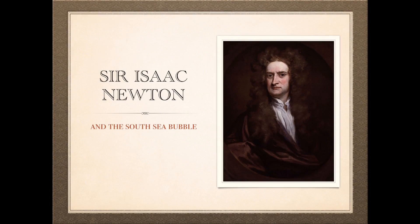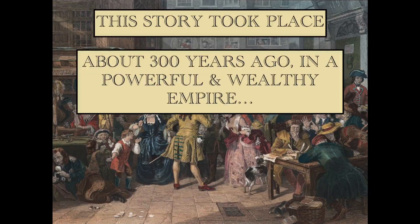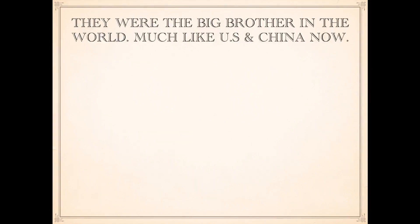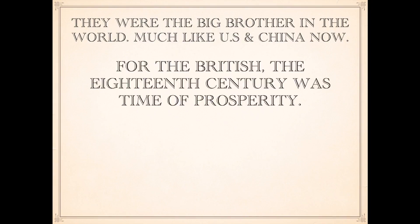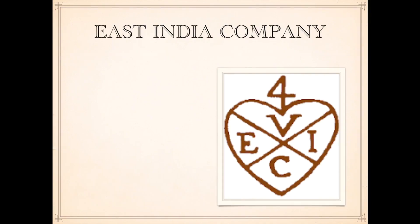Sir Isaac Newton and the South Sea Bubble. This story took place about 300 years ago in a powerful and wealthy empire — the United Kingdom. They were the big brother in the world. For the British, the 18th century was a time of prosperity. A large section of the population had money to invest and were looking for places to show off their money. Back then, owning stock was a privilege thing for the high-class people.